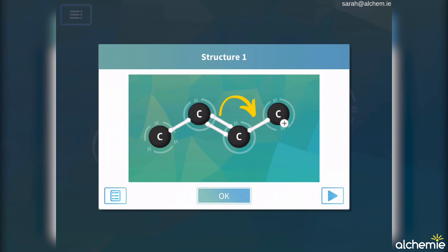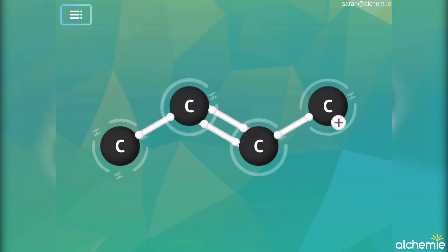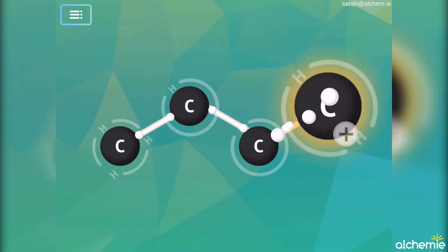When you go to play the puzzle, though, there are no arrows. Instead, you use your finger to move the electrons and complete the mechanism.